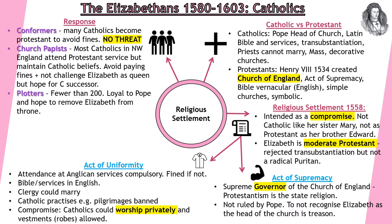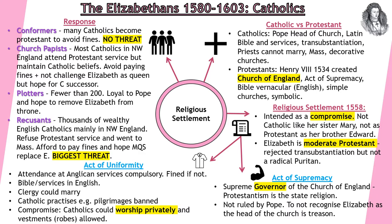There are going to be plotters throughout Elizabeth's reign but there are fewer than 200. Plotters want to actually physically remove Elizabeth from the throne and they are loyal to the Pope rather than Elizabeth. But the people who are actually the biggest threats are the recusants — thousands of wealthy English Catholics mainly located in the North West of England. They refused Protestant church services and went to Mass instead. They can afford to pay the fines because they belong to the gentry or nobility class, and they hope to replace Elizabeth with Mary Queen of Scots. They are the biggest threats because they have the money, the influence, and are by far the most numerous.